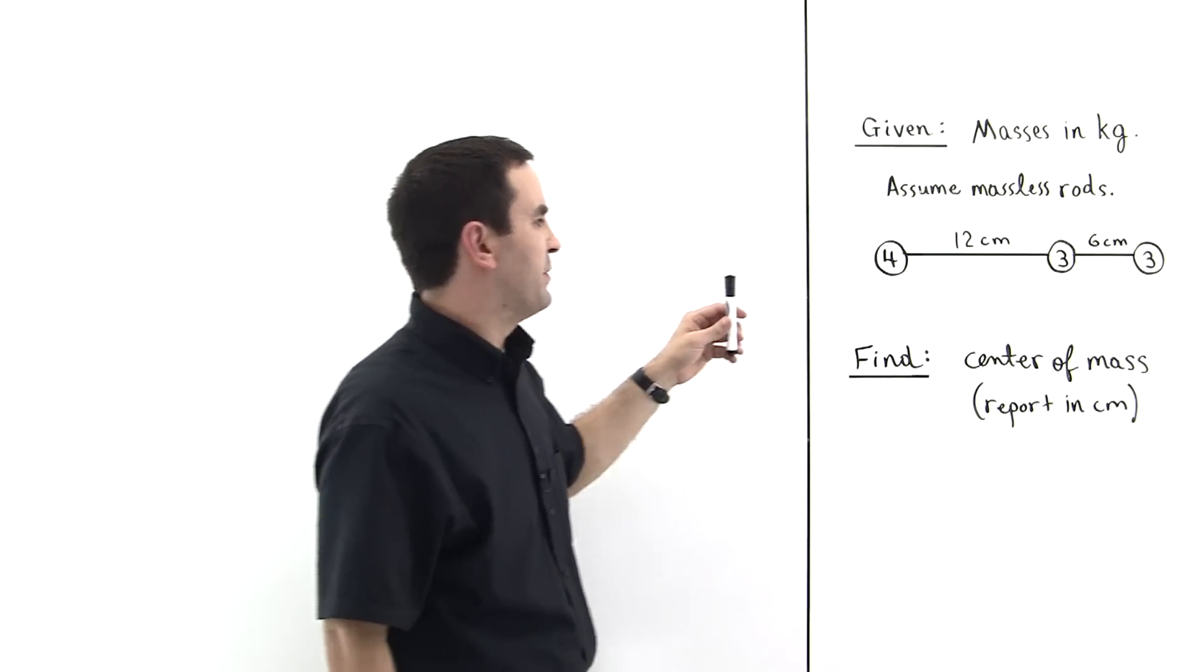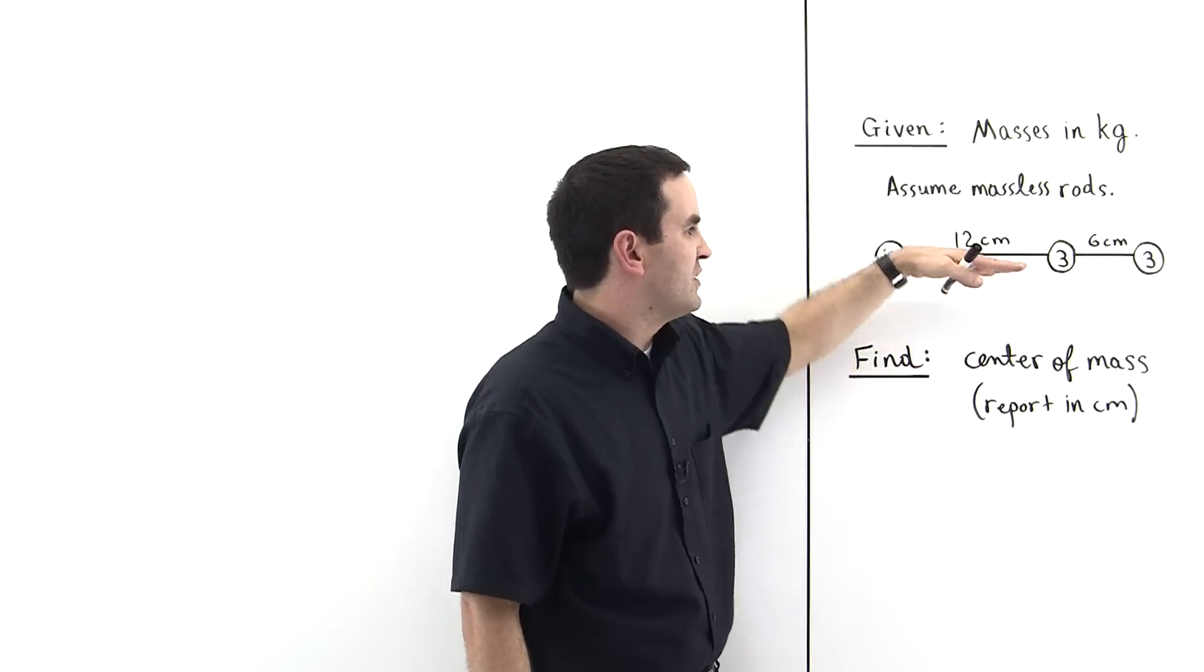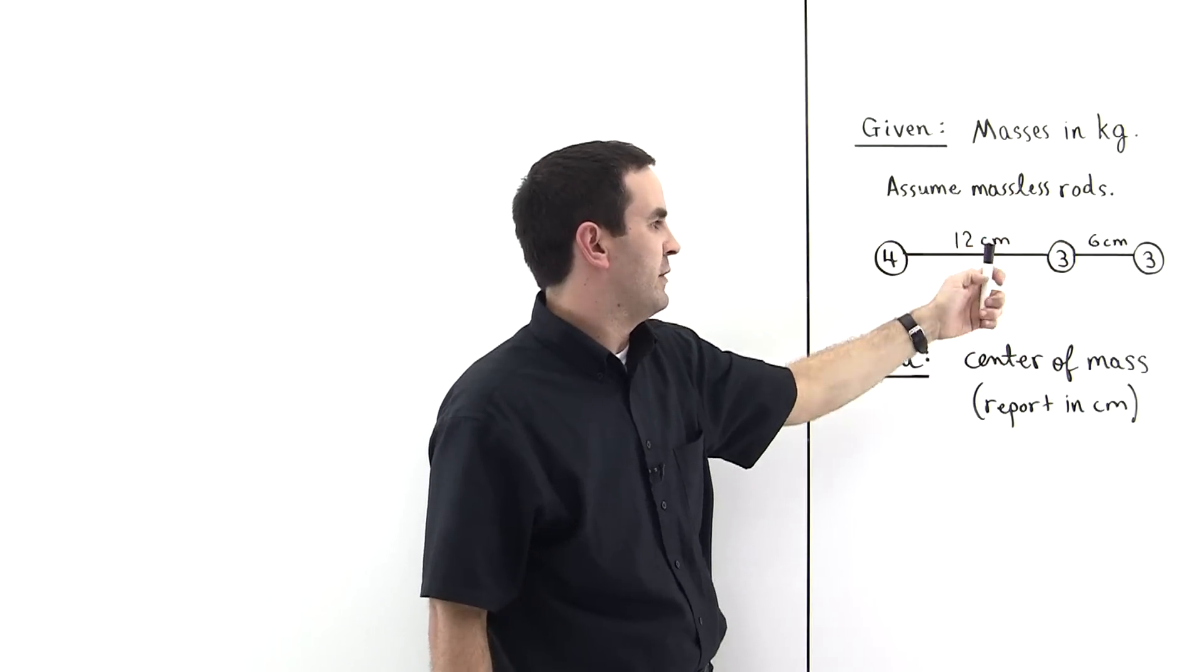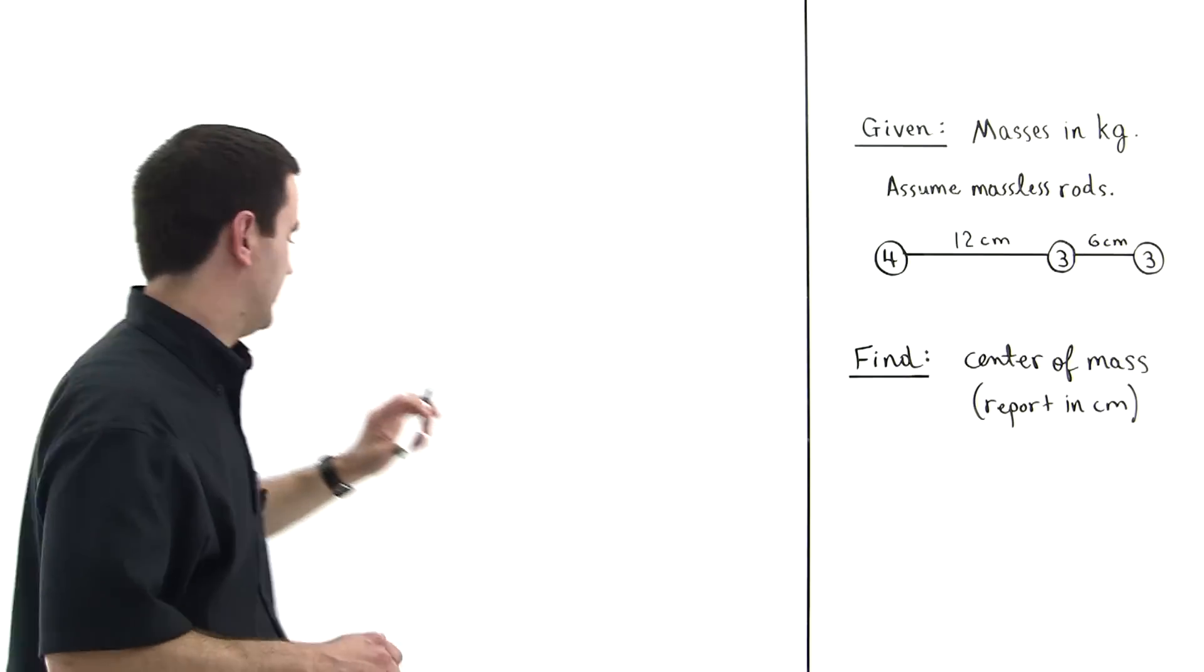So the center of mass is the place where we could put this marker, and this thing would just balance right at that location. It wouldn't fall this way, it wouldn't fall this way, it would just balance. So we want to find that location.